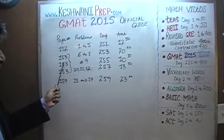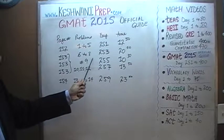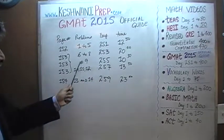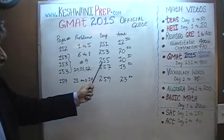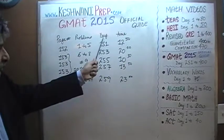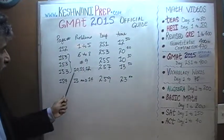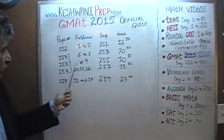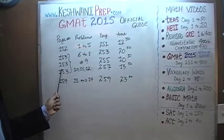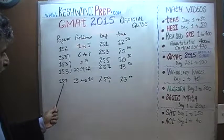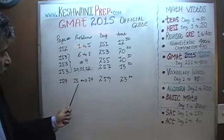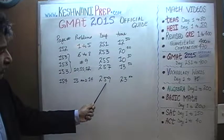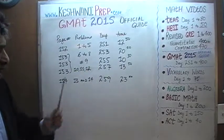On page 153 we have problems 6 through 8, which were done on day number 253. Problem number 9 only was done on day number 255. Problems 10, 11, and 12 — you will find the solutions to those problems on day number 257. These are all the problems on page 153. And finally, on page 154, problem numbers 13 and 14, you will find the solutions to those problems on day number 259.